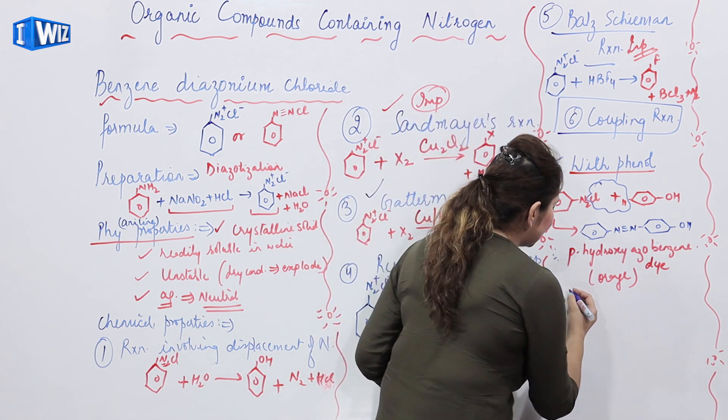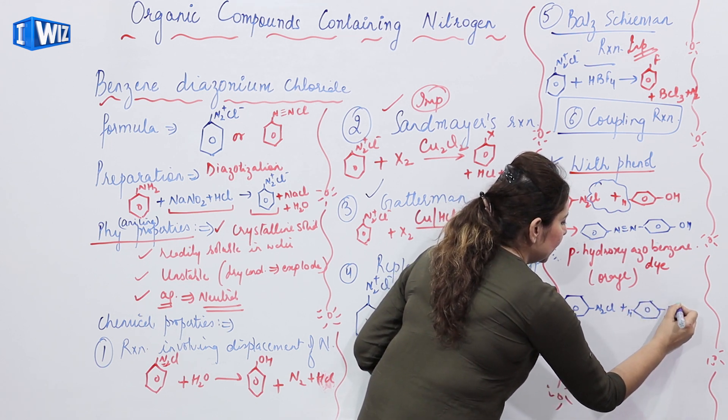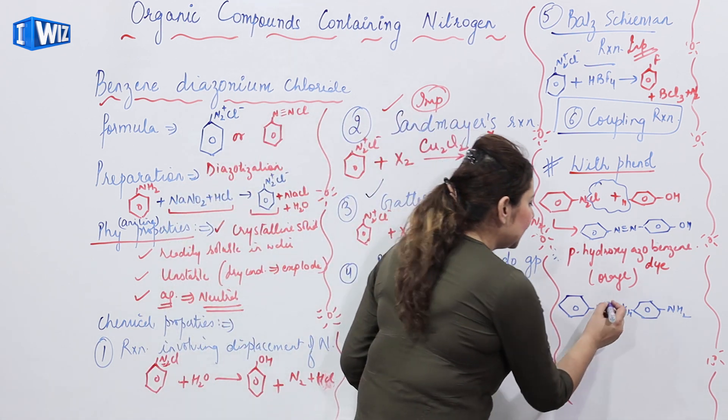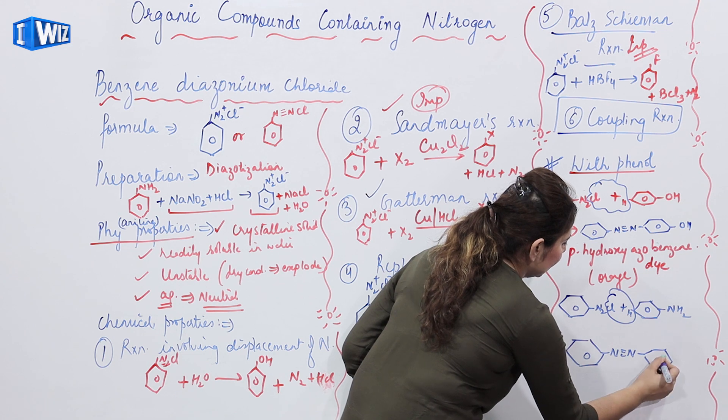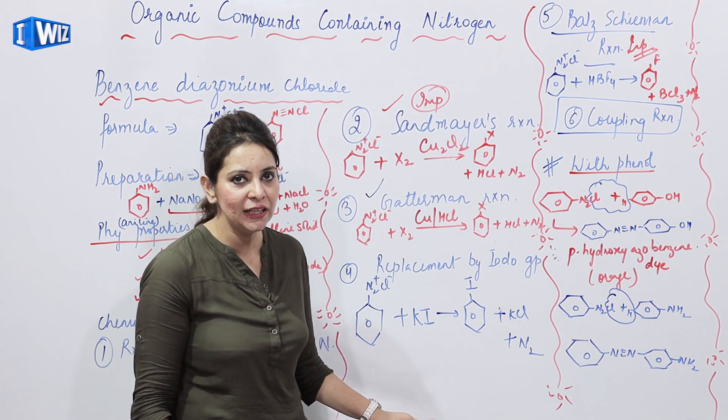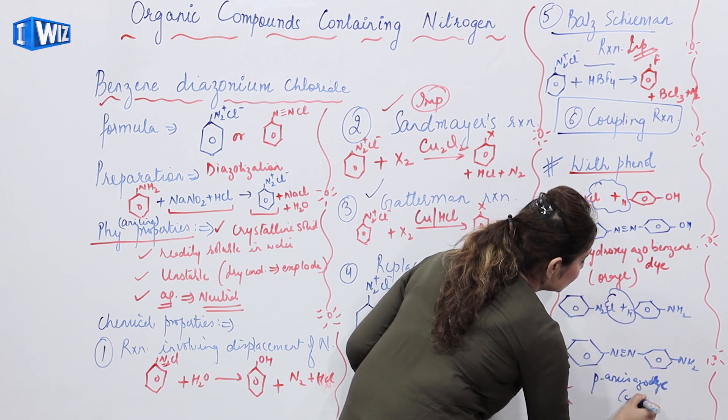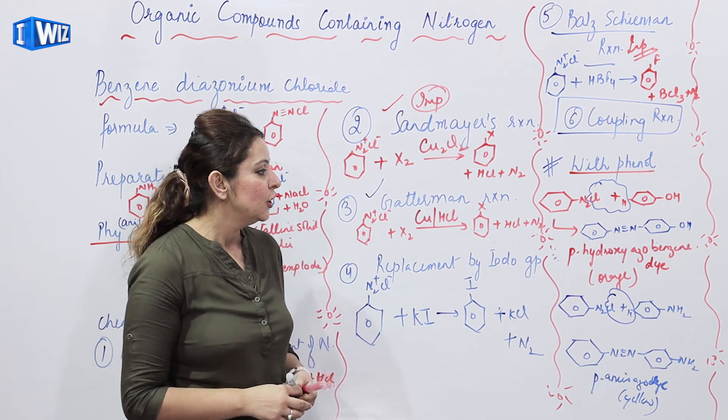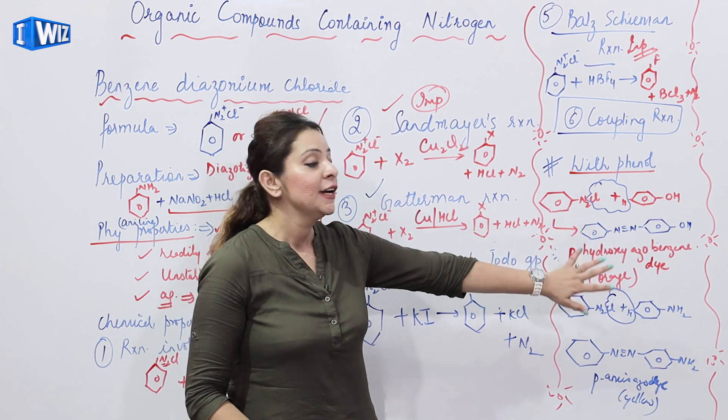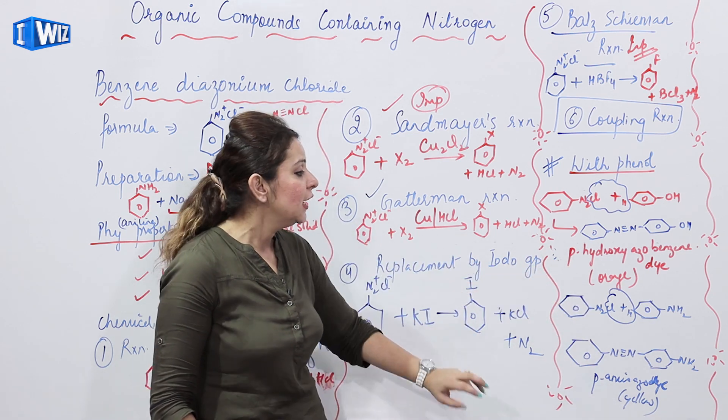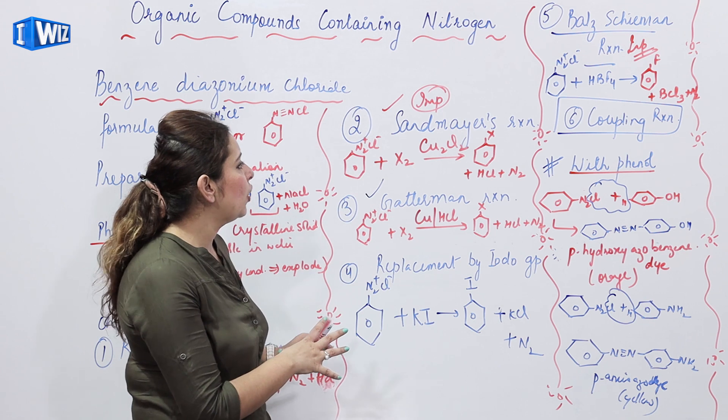Likewise, we can couple it with amine as well. So this is the compound. This is again a dye. What dye is this? Para amino azo dye. This is para amino azo dye. And it is not of orange color. It is of yellow color. So I think you got it. These two are the tests related to benzene diazonium chloride. You can form the respective dyes. If you couple it with phenol, you are getting para hydroxy azo benzene dye which is of orange color. And if you are coupling it with benzene amine, then you are getting para amino azo dye which is of yellow color. So this is all about benzene diazonium chloride.